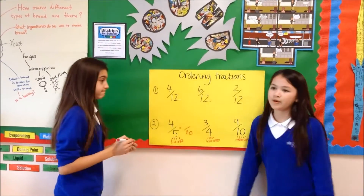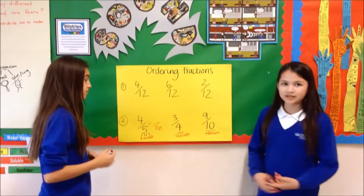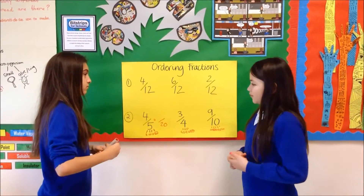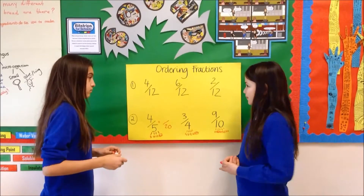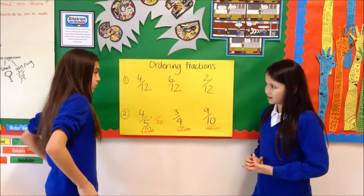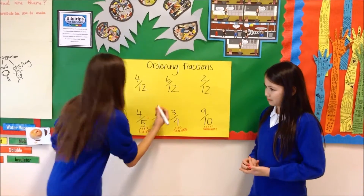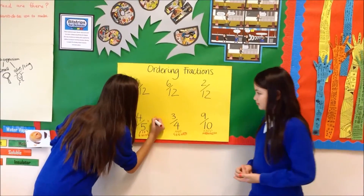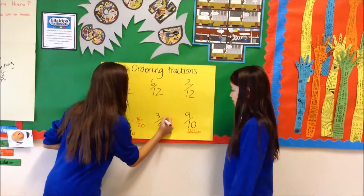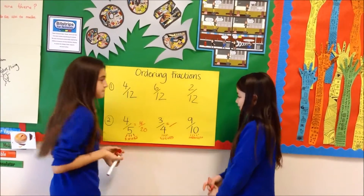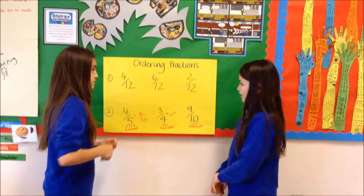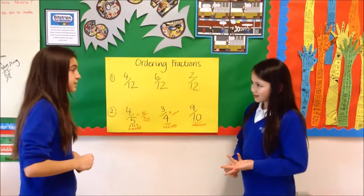So what we do to the denominator, we do to the numerator. So 5 times 4 equals 20, and it's 4 times 4. 4 times 4 equals 16. So it's exactly the same here. So 4 times what equals 20? It's 5.